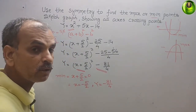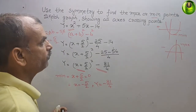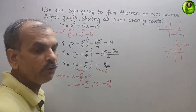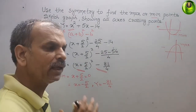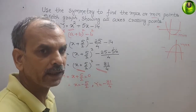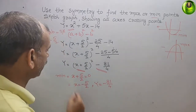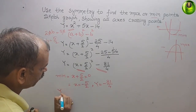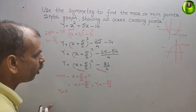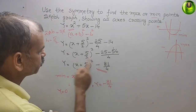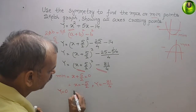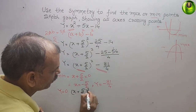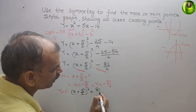These are the minimum coordinates. Now we will find all axis crossing points. First, we take y = 0 to find the x-intercepts. Setting y = 0, we bring the term to the right side: (x + 5/2)² = 81/4.